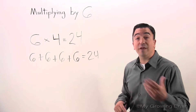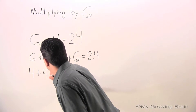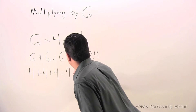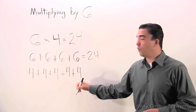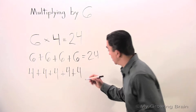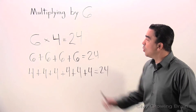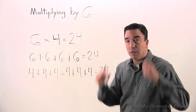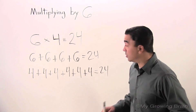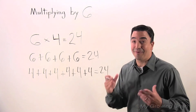We also know that 6 fours makes 24. 4 plus 4, plus 4, plus 4, plus 4, plus 4, plus 4, plus 4, plus 4 equals 24.